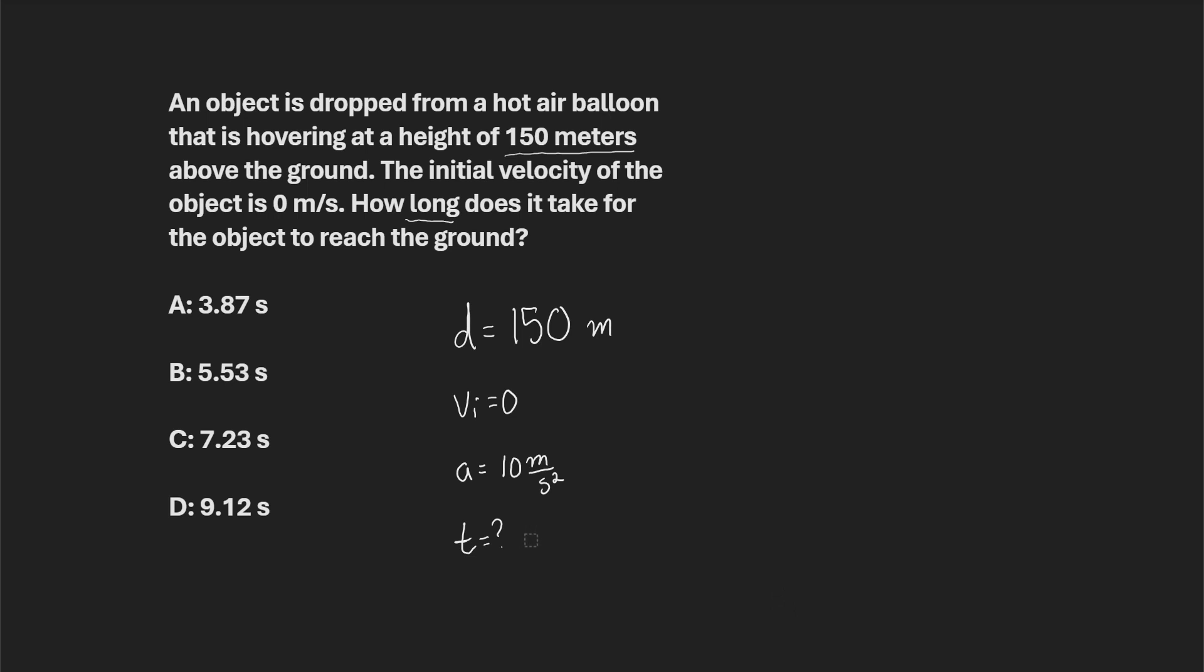And so, of course, the equation that we can use for that is distance is equal to one-half at squared, and then plus v initial times t, but of course, v initial times t, the whole value is going to be zero because v initial is zero. So we can eliminate that part of the equation, and this is what we're dealing with.